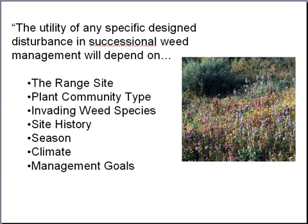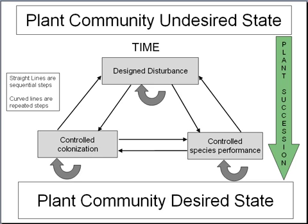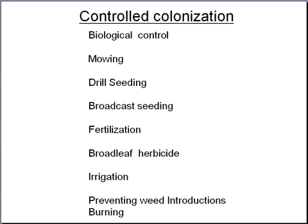The next category is controlled colonization. Controlled colonization is the intentional alteration of availability and establishment of various plant species. Colonization may be influenced in a positive or negative manner depending on the species and successional goals. Controlled colonization efforts are directed towards influencing seed banks, propagule pools, and regulation of safe sites for germination and establishment of desired species.